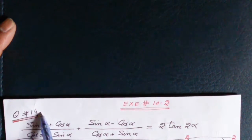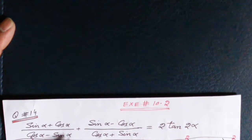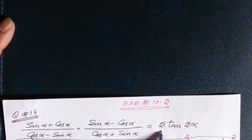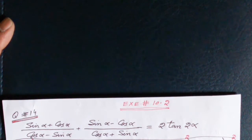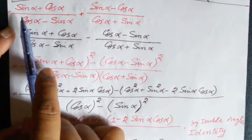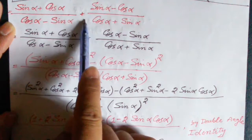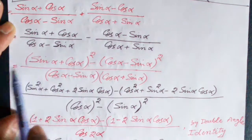Exercise 10.2, question number 14. The question is: prove that (sin α + cos α)/(cos α − sin α) plus (sin α − cos α)/(cos α + sin α) is equal to 2 tan 2α, where 2α is the double angle of α. The left-hand side of this equation is (sin α + cos α)/(cos α − sin α) plus (sin α − cos α)/(cos α + sin α).